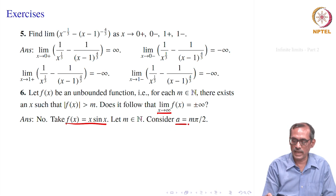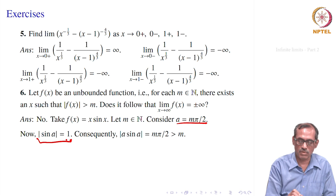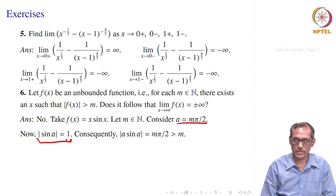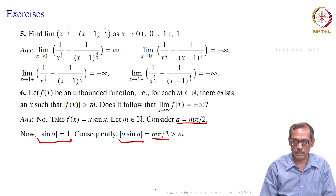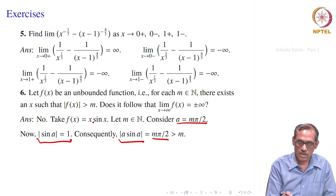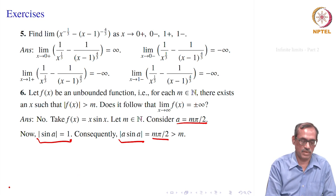For f(x) = x·sin(x), let m ∈ ℕ and take a = mπ/2. Then |sin(mπ/2)| = 1, so |f(a)| = |a·sin(a)| = mπ/2, which is certainly bigger than m. So for each m in ℕ we can find x = mπ/2 such that |f(x)| > m, proving f is unbounded.